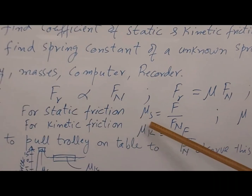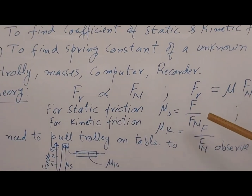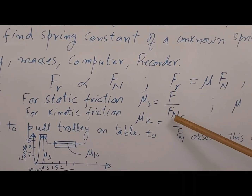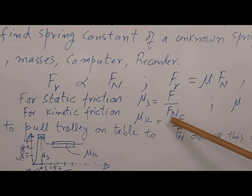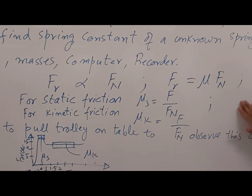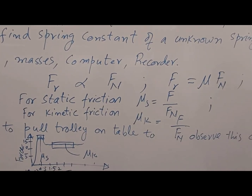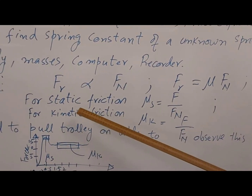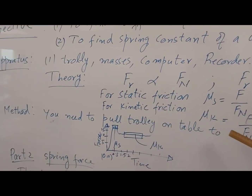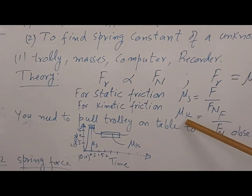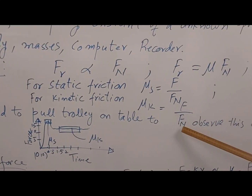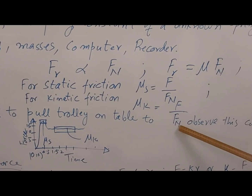For static friction, mu_s equals the force of friction divided by the normal force. For kinetic friction, mu_k is equal to the force of friction divided by the normal force.